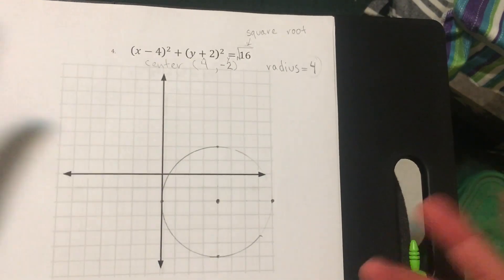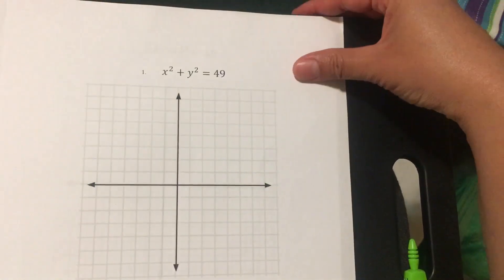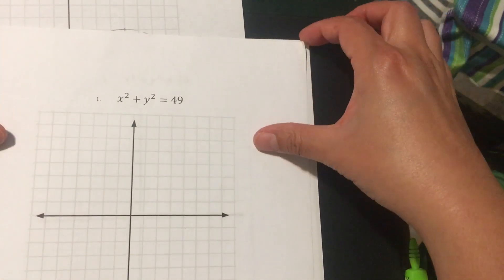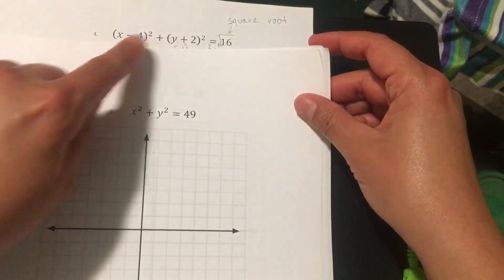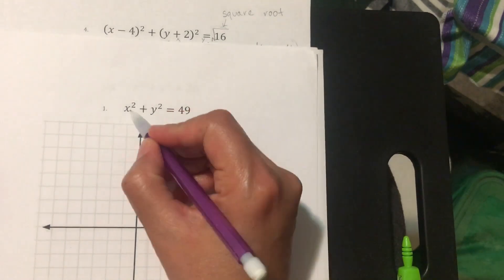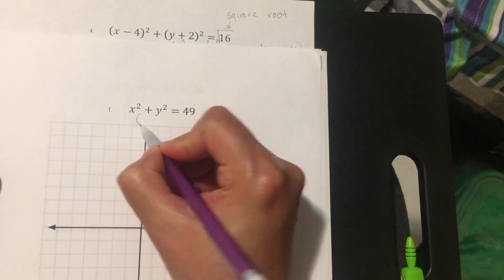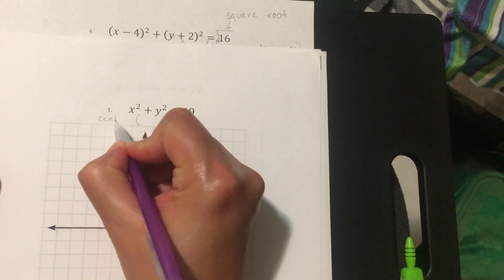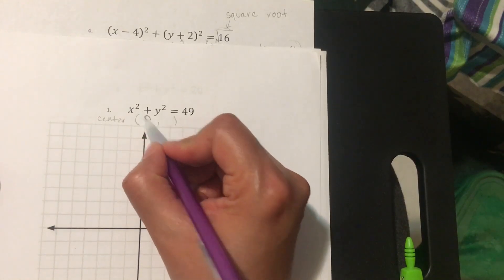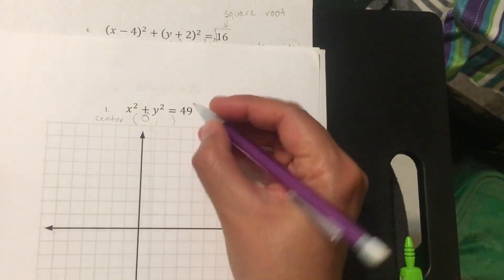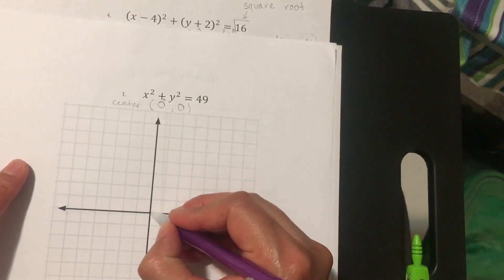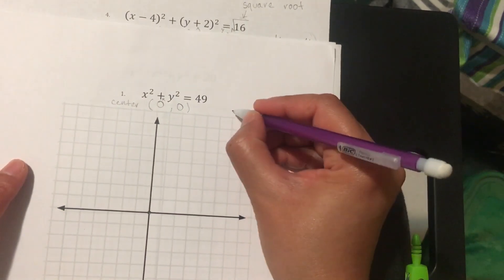That was exercise number four. Now let's go to number one. When you don't subtract or add anything inside parentheses — you just have the variable squared — your center will be at zero. There's nothing being added or subtracted, so the answer for x is zero and for y is zero, meaning the center is at the origin, (0, 0).